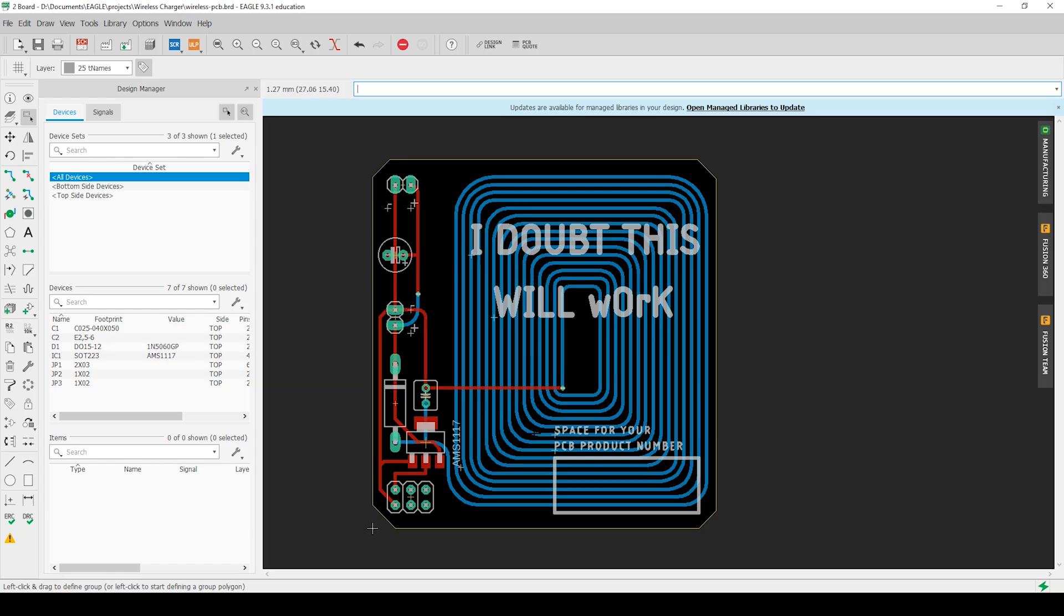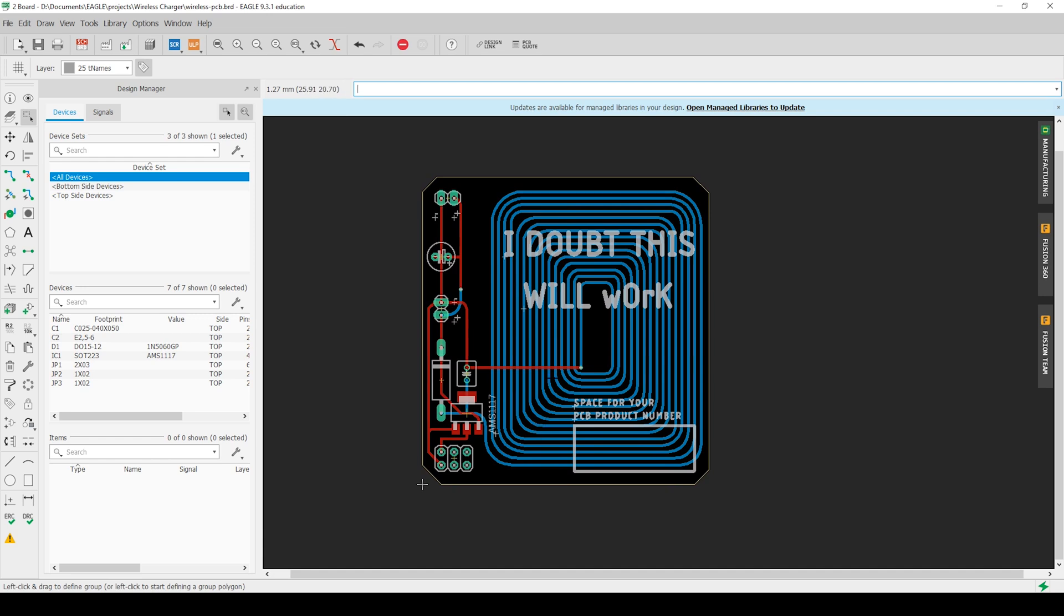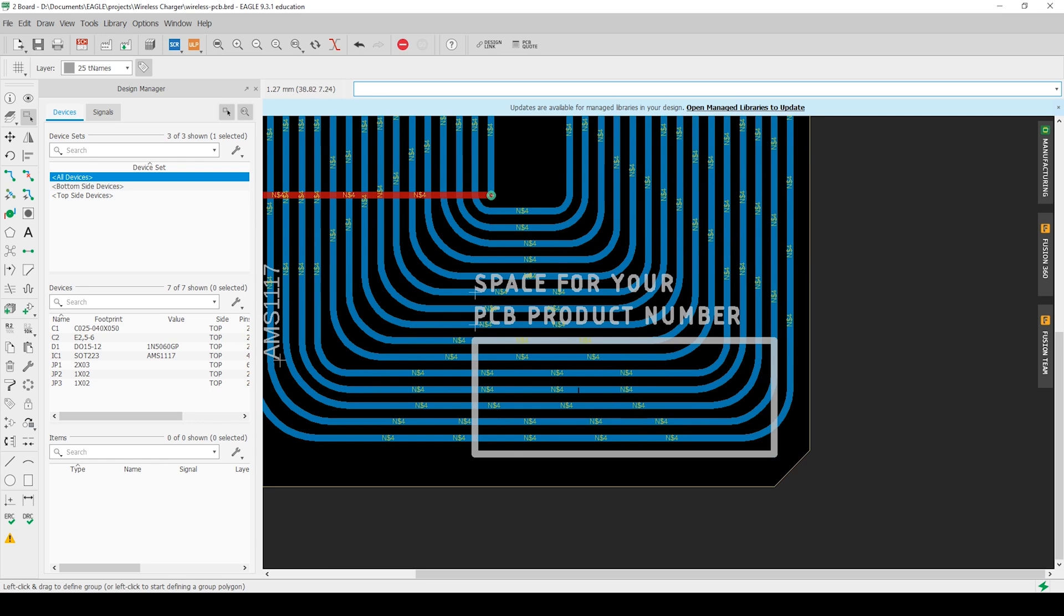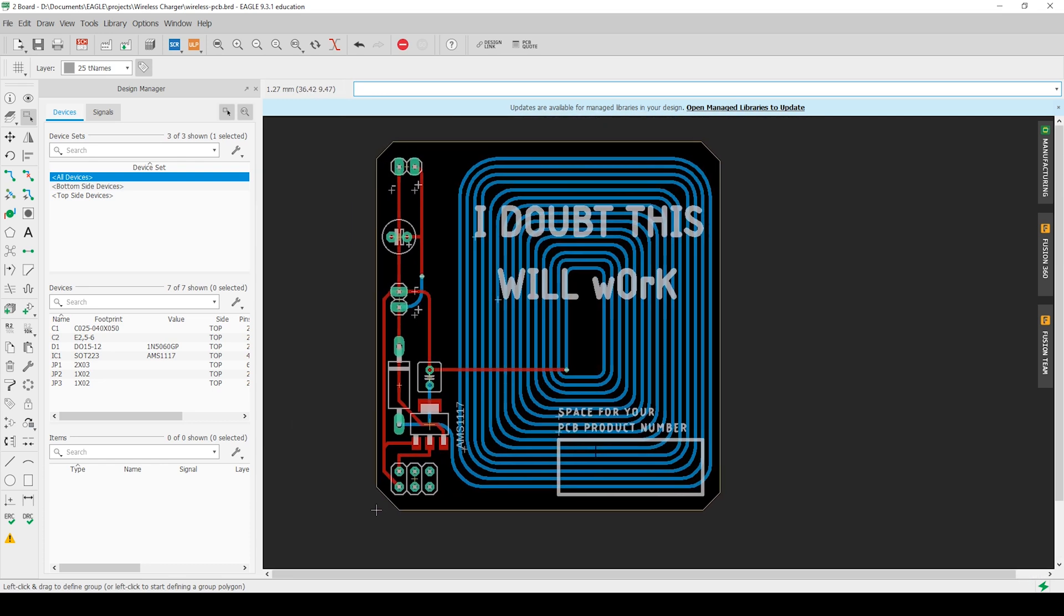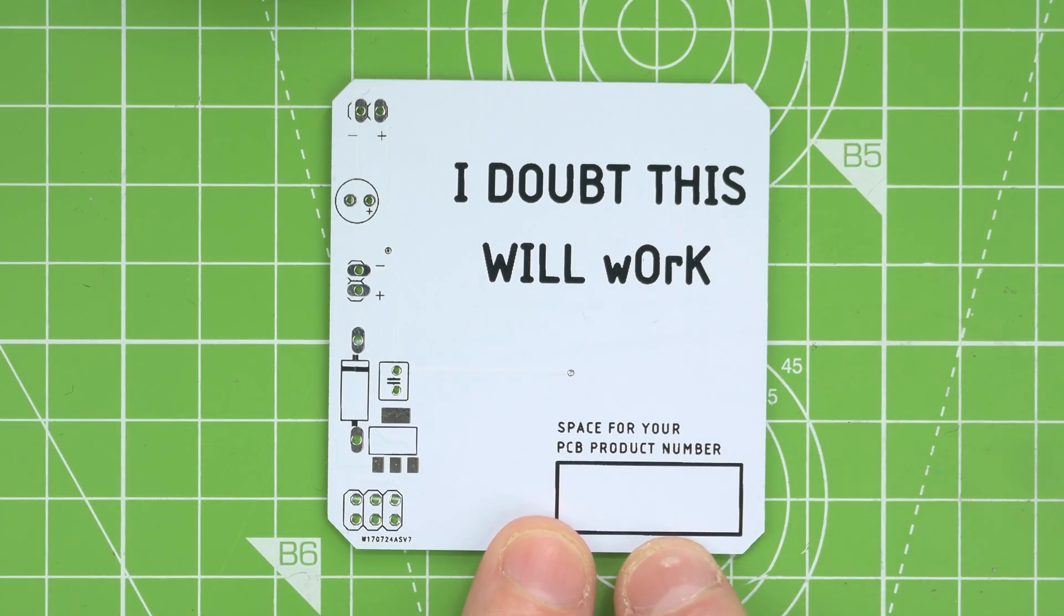I knocked up my schematic and did a PCB design. You'll notice on this PCB design I said 'I doubt this will work,' and I do doubt it will work. I also put a space for your PCB product number. Let's see if they used that. Well, no they didn't. Never mind, they put it down here, but these PCB product numbers are very small, aren't they?